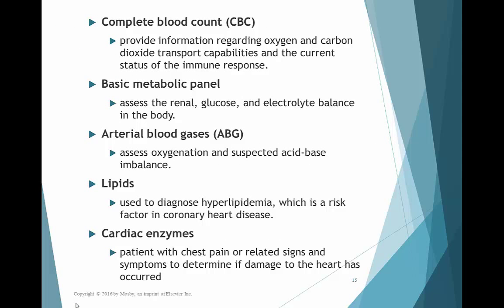We might run laboratory tests such as a CBC, which tells us red blood cell count, hemoglobin, and hematocrit. We look at WBCs to assess for infection and check oxygen-carrying transporters. A metabolic panel can reveal renal function and glucose levels — important if the patient has diabetic ketoacidosis or severe hypoglycemia — as well as electrolyte imbalances. We might also look at arterial blood gases, which assess both oxygenation status and acid-base balance.